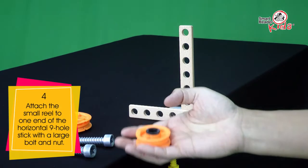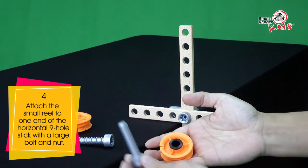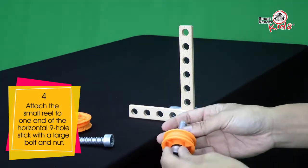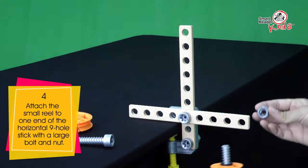Attach the small reel to one end of the horizontal 9-hole stick with a large bolt and nut.